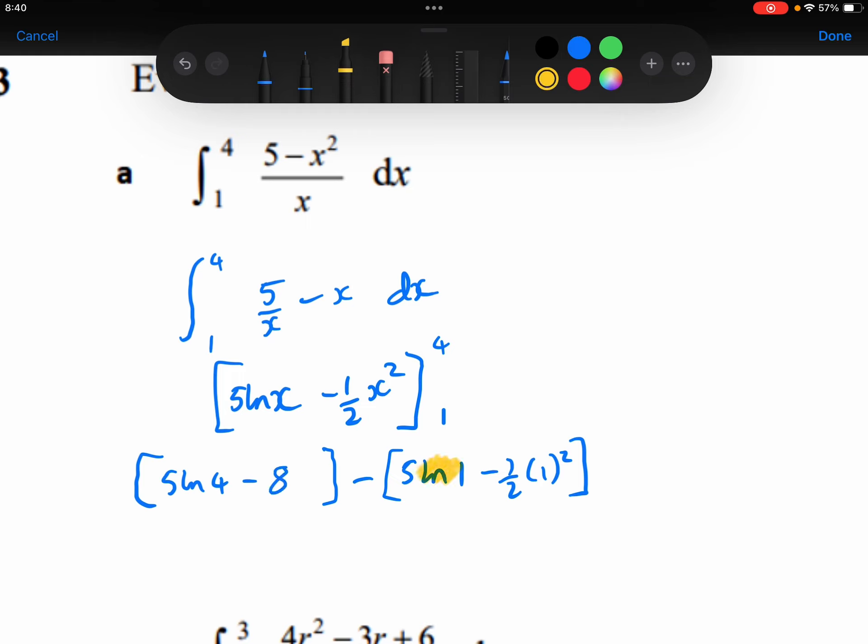5 ln 1 is just 0, so 5 times 0 will be 0. 1 squared is 1 times by the minus 1 half is minus 1 half. So 5 ln 4 minus 8 minus minus 1 half. The minus 8 plus 1 half is minus 15 over 2.